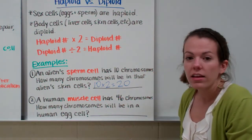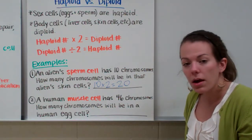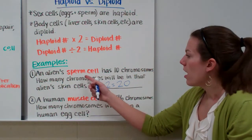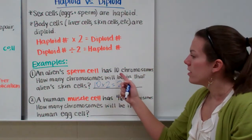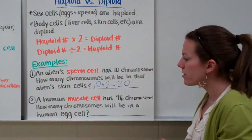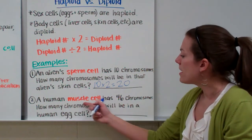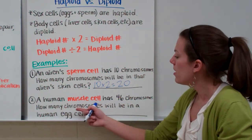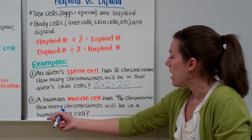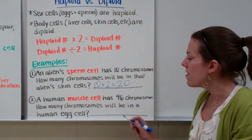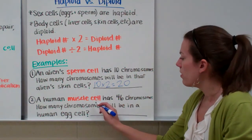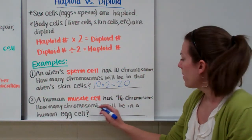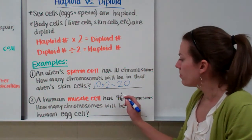So the alien's skin cells, or any of the alien's body cells, will have twenty chromosomes, because skin cells are diploid and the sperm cell is haploid. Now for our second example: a human muscle cell has forty-six chromosomes. How many chromosomes will be in a human egg cell? Muscle cells are body cells, and body cells are diploid, so it has forty-six chromosomes.